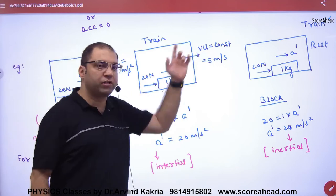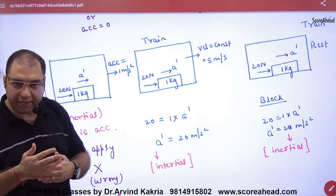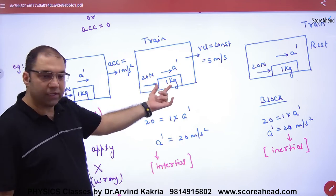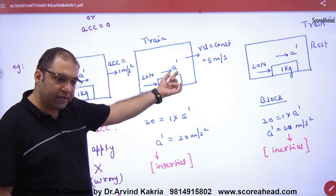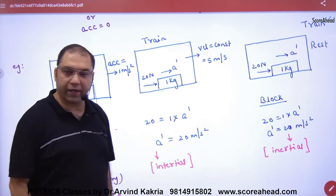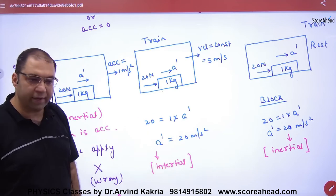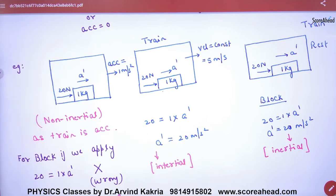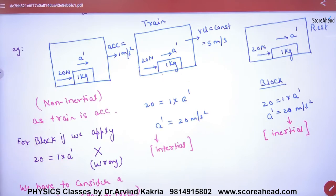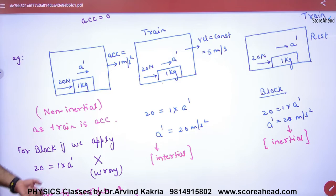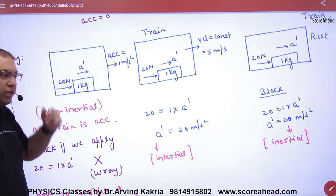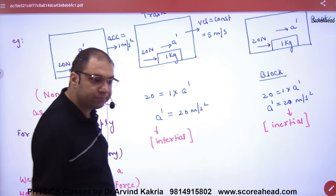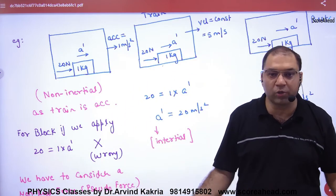Case 3: the train is accelerating — non-inertial frame. The same box has the same 20 N force applied. But when I put this into the formula — 20 = 1 × a — my answer is wrong. I am applying F = ma correctly, but the answer comes out wrong. Why is it wrong? Because the frame is non-inertial.